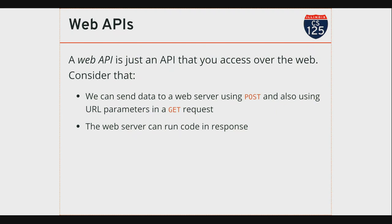The server can run code — it takes my request and can do all sorts of interesting stuff. It doesn't have to just send back static information. When you use a web API like the Cognitive Services API, there's actually a lot of processing involved in answering each request. It's the same thing with Google — you do a Google search and there's work done on Google's servers to figure out what results to send you. It's incredible that this happens so fast. Google even supports live query, repeating the search as you type to auto-generate suggestions.